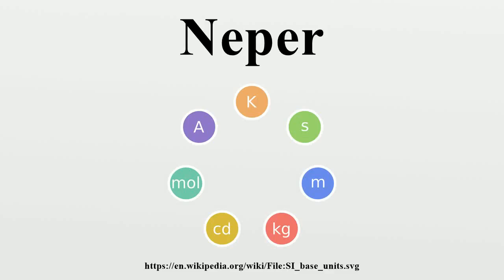The Neper is a logarithmic unit for ratios of measurements of physical field and power quantities, such as gain and loss of electronic signals. The unit's name is derived from the name of John Napier, the inventor of logarithms.